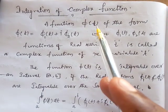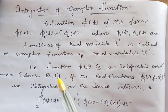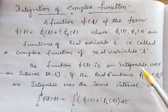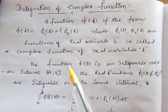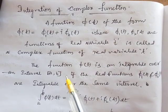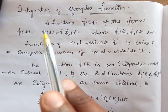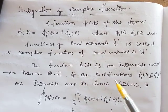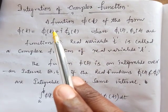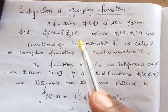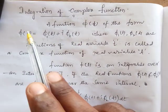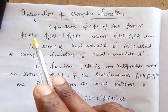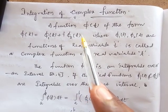The complex function φ(t) is integrable over an interval a to b if the real functions φ₁ and φ₂ are integrable over the same interval. Without φ₁ and φ₂ being integrable over the interval, the complex function cannot be integrable. So φ(t) integrable over the interval means φ₁ and φ₂ are integrable over the same interval.